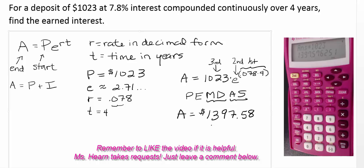Now remember, that's the total amount in the account at the end of the four years. But we were not asked that. We were asked for the earned interest. A is the sum of the principle plus the earned interest. Or another way of saying that is the earned interest that we're looking for, I, is going to be A minus the original principle.